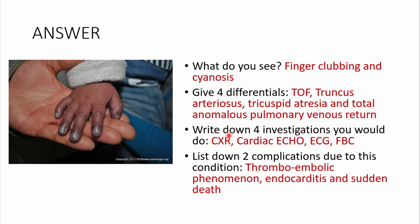Investigations: order a chest X-ray — you may see an oligemic lung field and a boot-shaped heart in Tetralogy of Fallot. Also order a cardiac echo, an ECG, and a full blood count. Two complications: thromboembolic phenomena — thrombi that could embolize — and endocarditis, especially in patients with cardiac defects. There could also be sudden death.